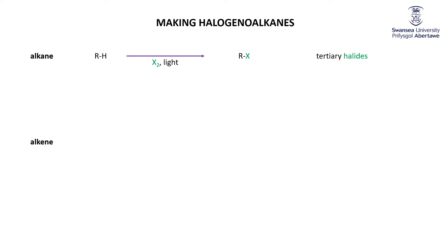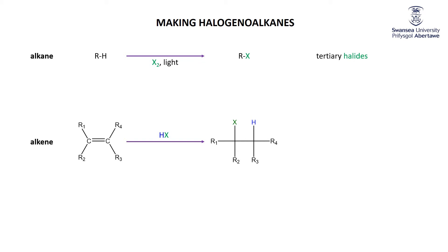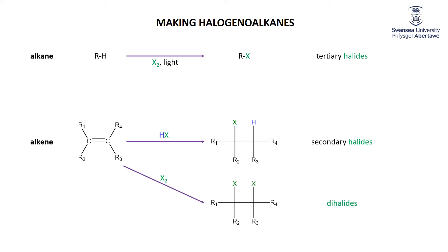We also saw halogeno-alkanes in alkene chemistry, where addition reactions of HX — where X is bromine or chlorine — followed Markovnikov's rules, making secondary and tertiary halides preferentially over primary. We also saw dihalides formed by reacting an alkene with bromine or chlorine, placing two halogen atoms where the double bond used to be. So halogeno-alkanes are no strangers to you.